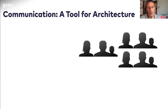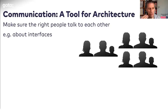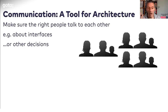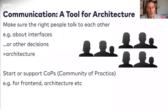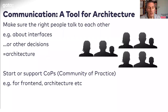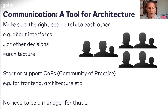If architecture is more about communication, you can start to use communication as a tool — not just organization. You can make sure the right people talk to one another. For example, interface negotiations are something you can set up to ensure specific teams talk when they share an interface. You can also support a community of practice — for front-end or for architecture — because there are specific decisions that need to be made. This creates communication infrastructure to tackle risk, and an architect starting a community of practice doesn't seem out of scope.